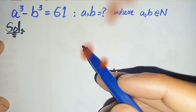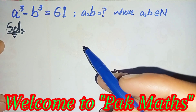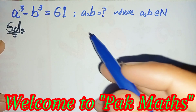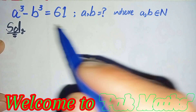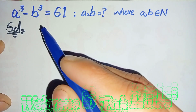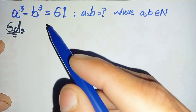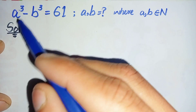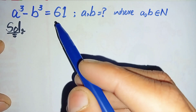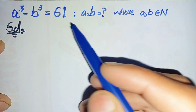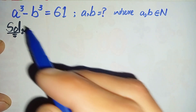Hello everyone, welcome to ParkMaze. In this video I am going to find the value of a and b in this nice exponential cubic equation, which is a cube minus b cube is equal to 61, where a and b are natural numbers.